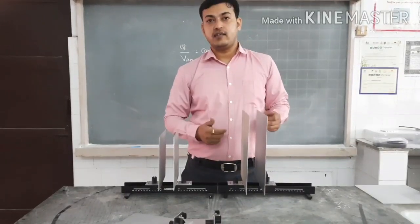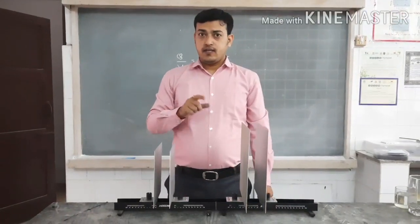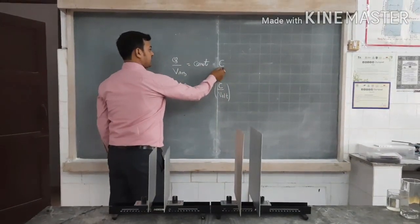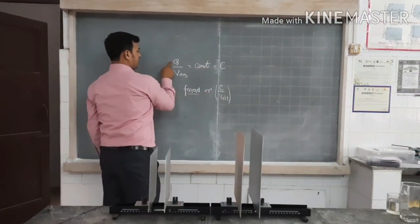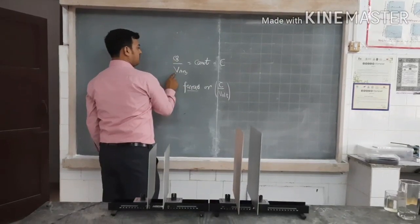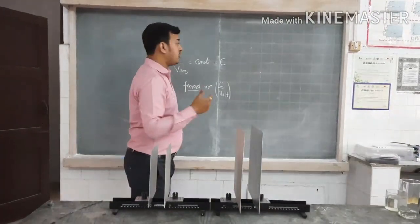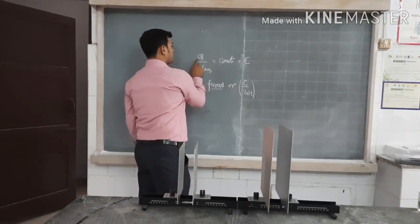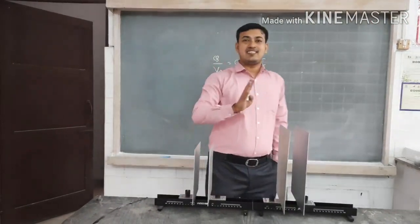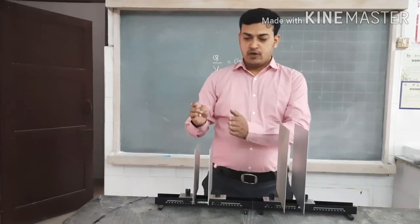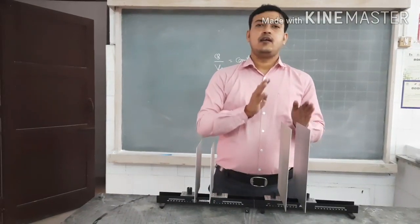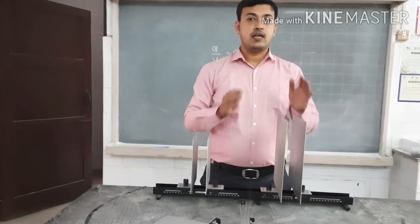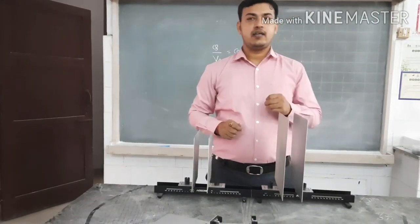There is a common confusion from the formula: since capacitance is the ratio of charge to potential difference, some predict that capacitance is proportional to charge — but this is not true. The capacitance of a capacitor does not depend on the charge on the plates. Let me clarify this point with a small activity.